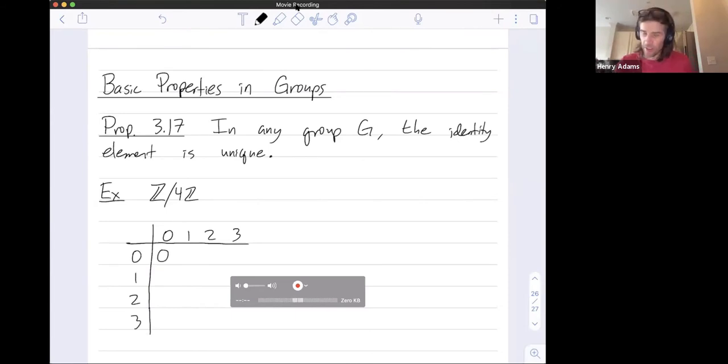So here are the things that add up to 0. 1 plus 3 is 4, which mod 4 is 0. Here are the things that add up to 1.